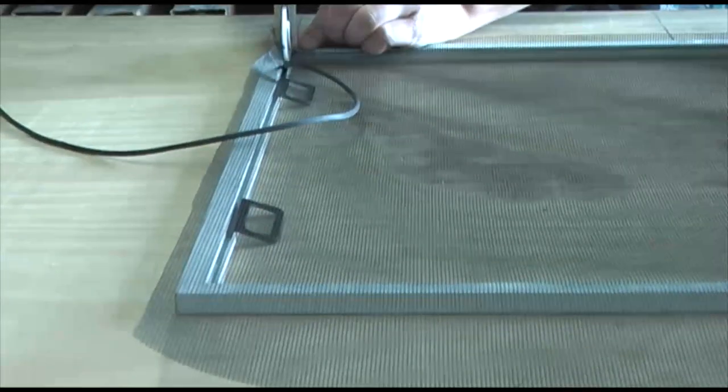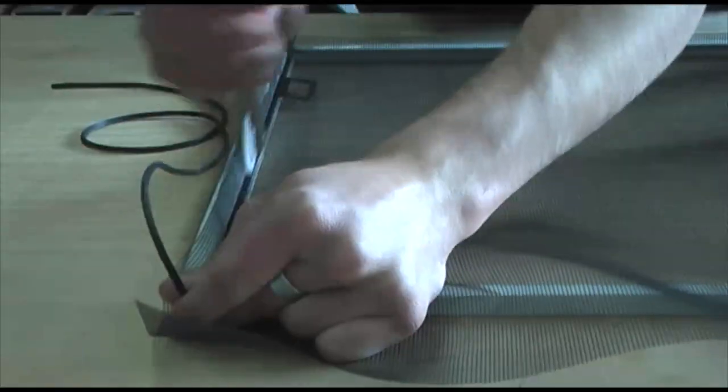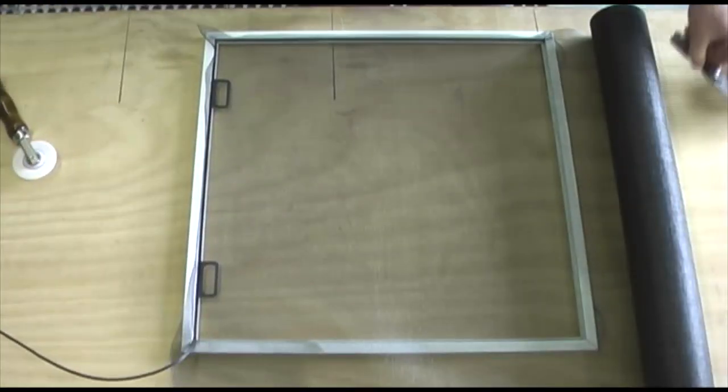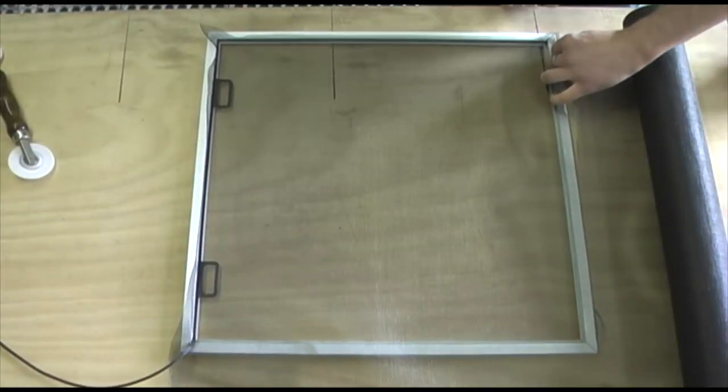In order to install your pull tabs, all you have to do is roll the spline over the pull tabs. Now, trim the excess screen so that you can continue working on the screen frame.